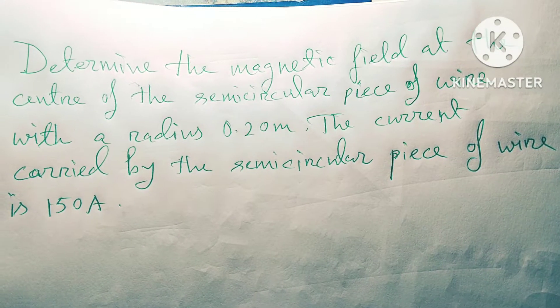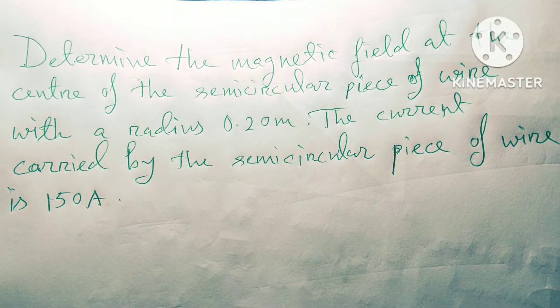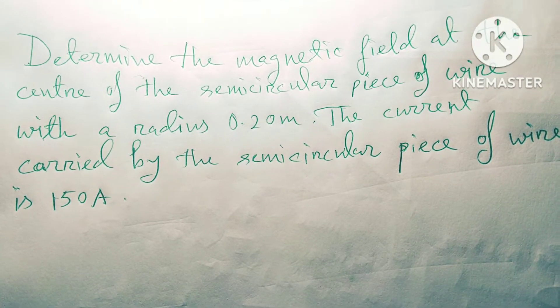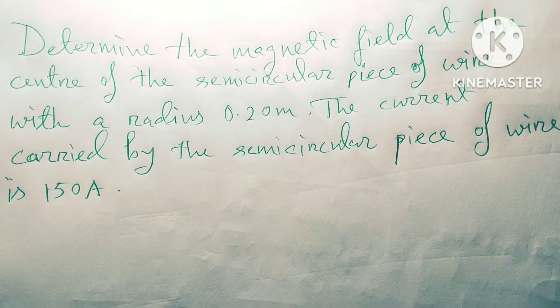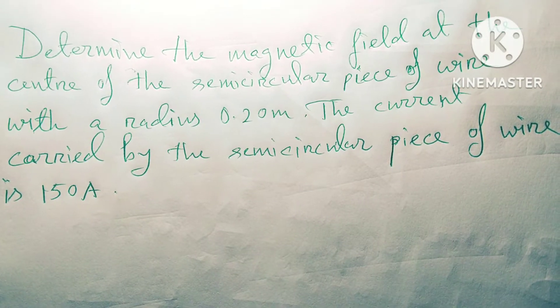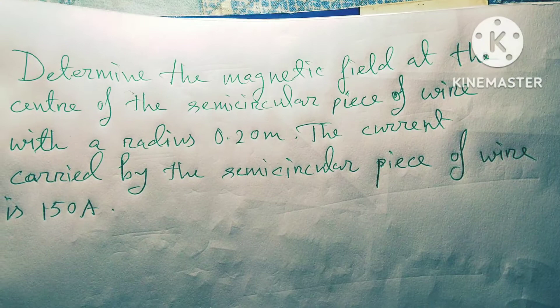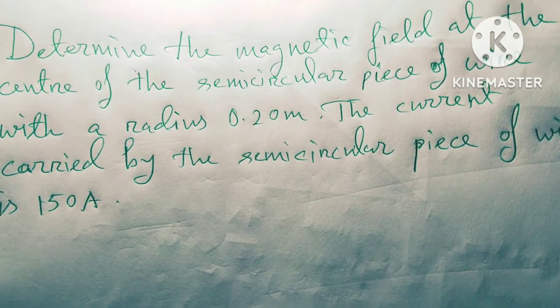Hello dear friends, welcome to my channel. Today's discussion is magnetic field. Determine the magnetic field at the center of the semicircular piece of wire with a radius 0.20 meter. The current carried by the semicircular piece of wire is 150 ampere.